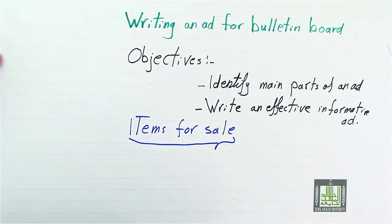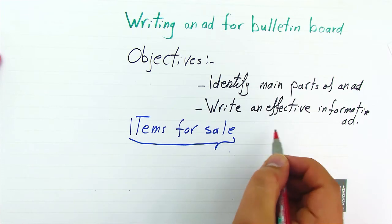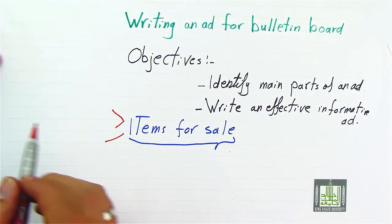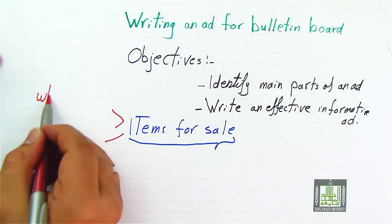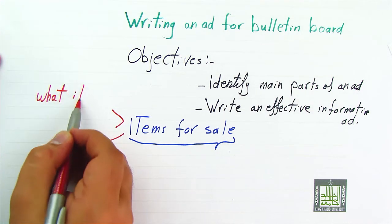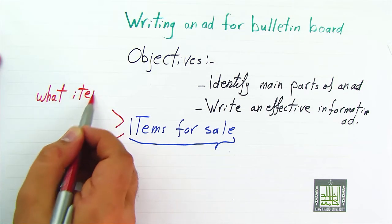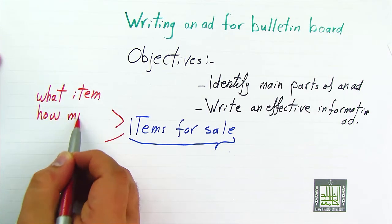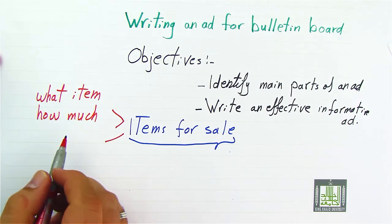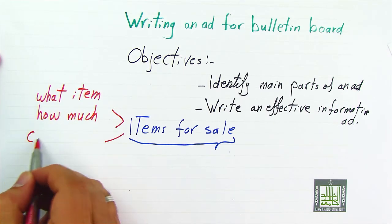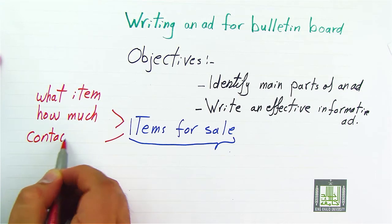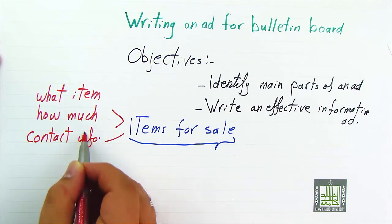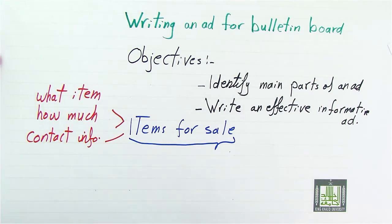When we write an ad, we have to make sure that three things are available in the ad: first, what item; second, how much; and third, contact information.